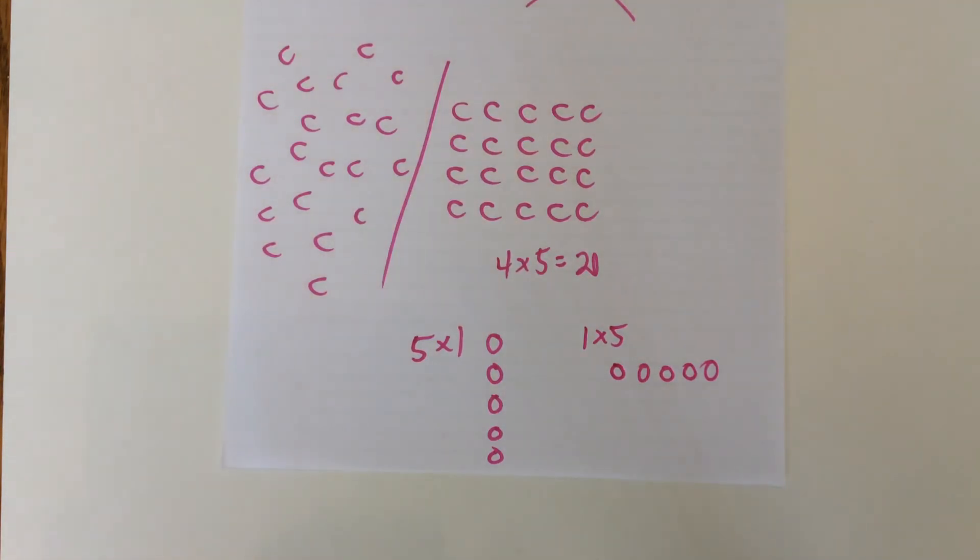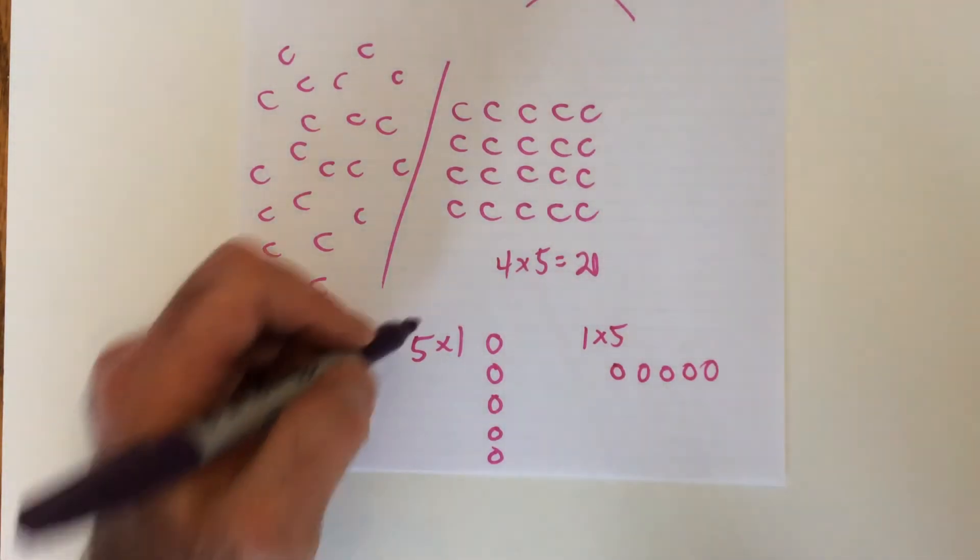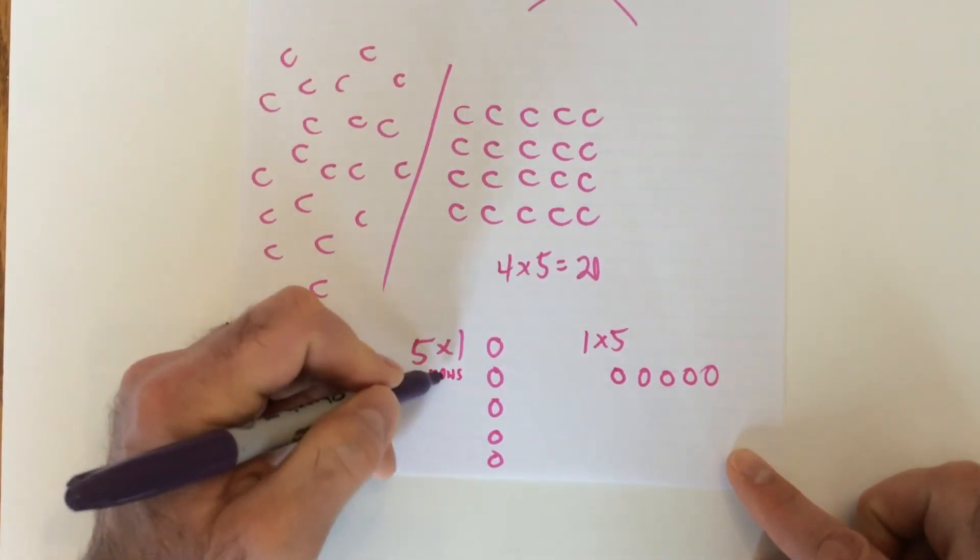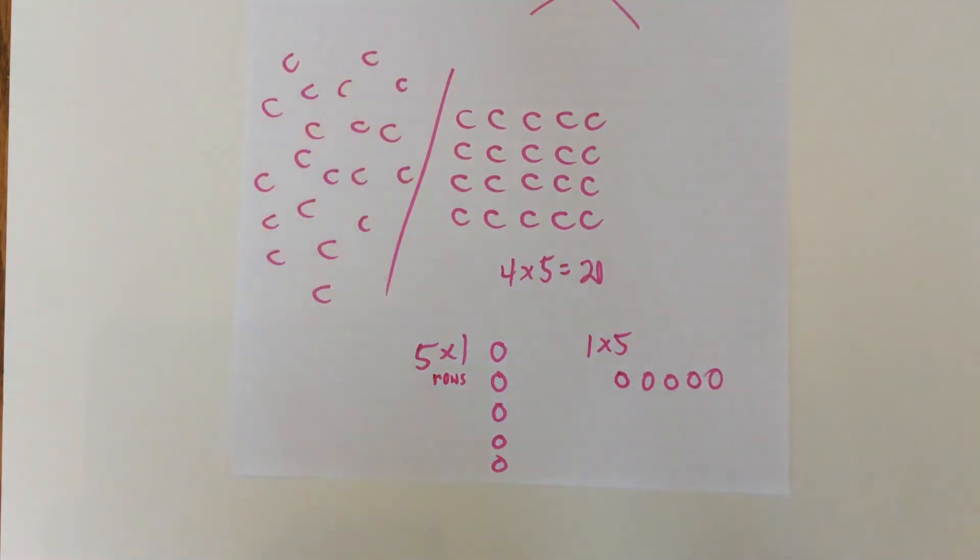So just be aware of that when you're doing the questions, and that you try to think of it as rows, five rows of one. One row of five, okay? Okay.